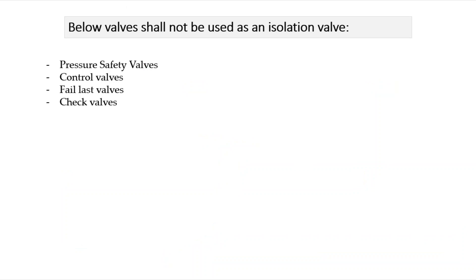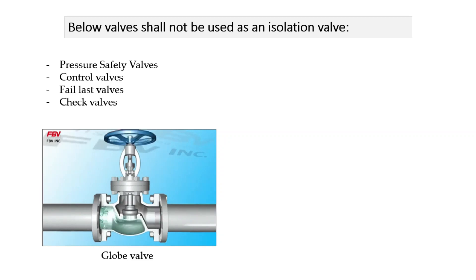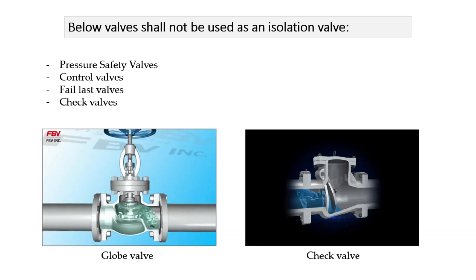It should also be noted that not all valves are suitable for use in an isolation process because of their design. For example, a risk of malfunction or accidental opening as a result of pressure changes makes control valves such as a globe valve unreliable for such a critical duty. The same thing applies to a check valve, with the addition of a physical impossibility to implement isolation with it.